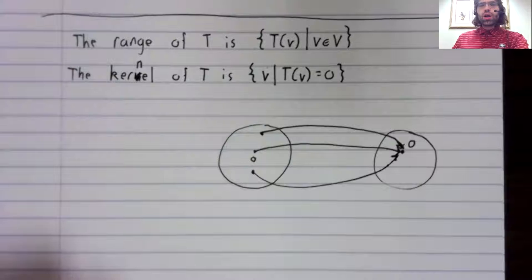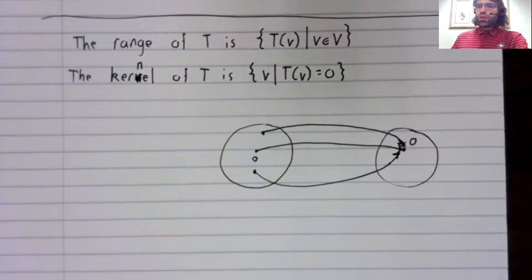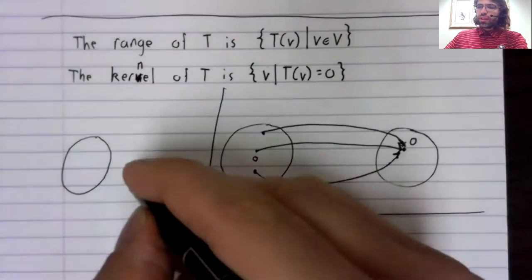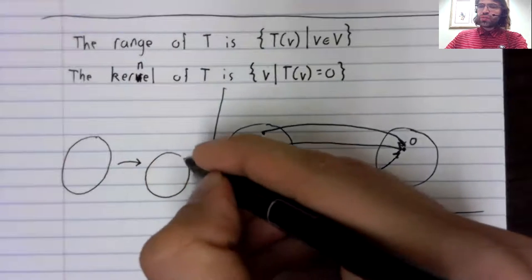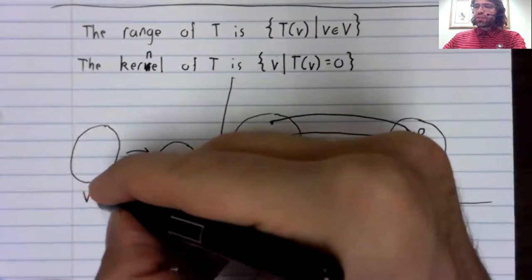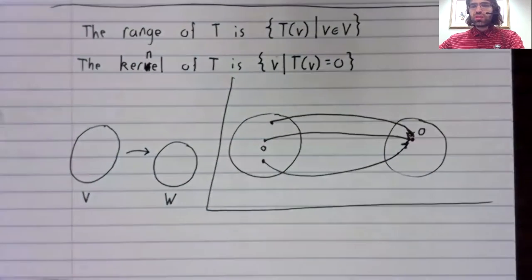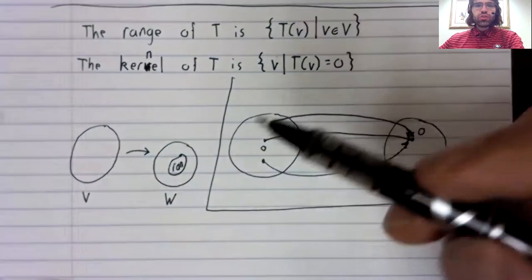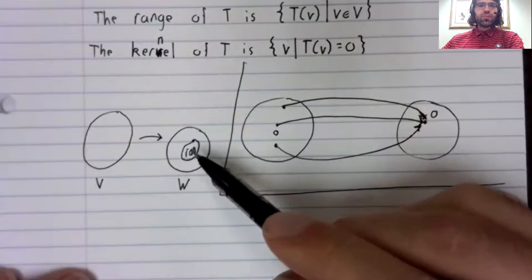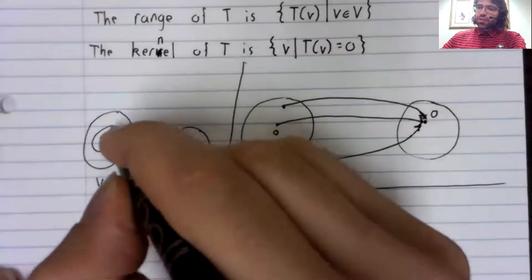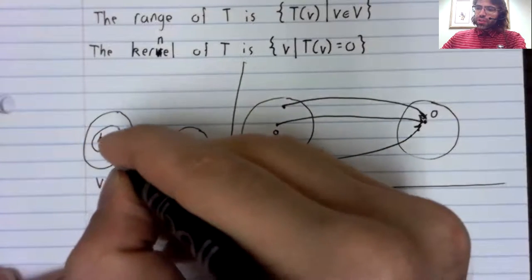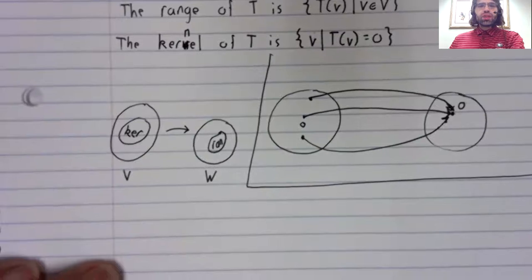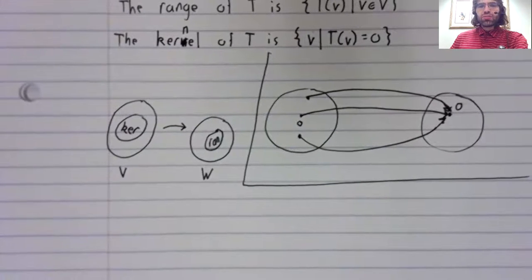The range and the kernel are presented together, but note that they're fundamentally different in the sense that a transformation is from a vector space V to a vector space W. The range is contained in W, and the kernel is contained in V. So they're sitting in different vector spaces.